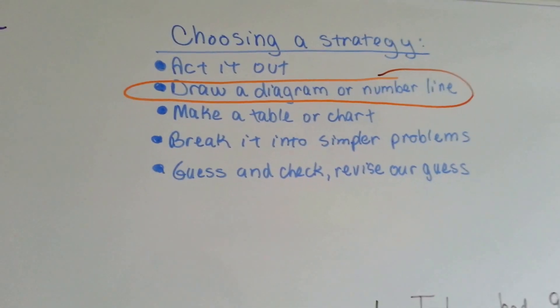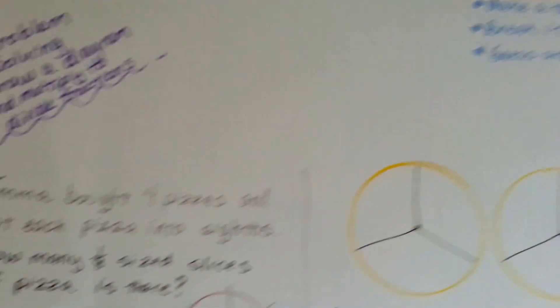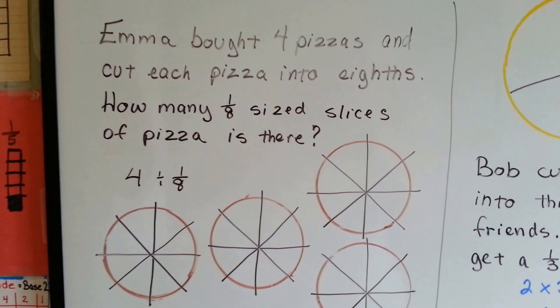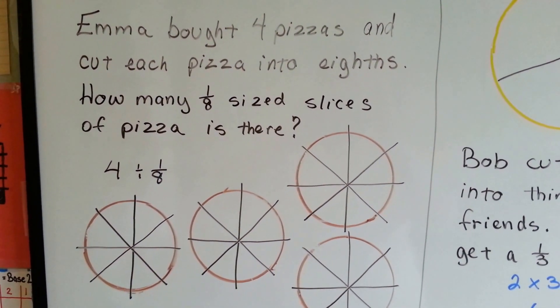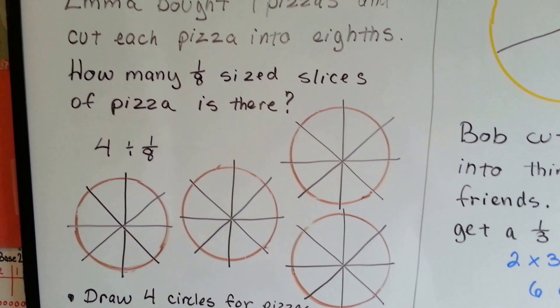So we're going to do word problems and we're going to draw a diagram and we're going to use multiplication to help us divide. Emma bought four pizzas and she cut each pizza into eighths. How many eighths slices of pizza is there?